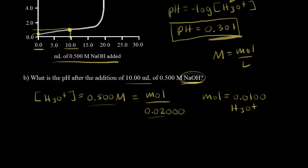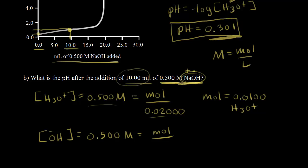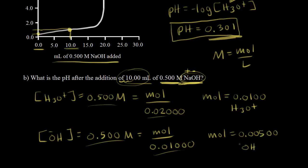We're adding some sodium hydroxide, which is a strong base. So the concentration of sodium hydroxide equals the concentration of hydroxide ions — Na⁺ and OH⁻. A 0.500 molar solution of sodium hydroxide gives 0.500 molar hydroxide ions. We need to find how many moles of hydroxide ions we have. The volume is 10 mLs, or 0.01 liters. So we multiply 0.5 by 0.01 to get 0.005 moles of hydroxide ions.